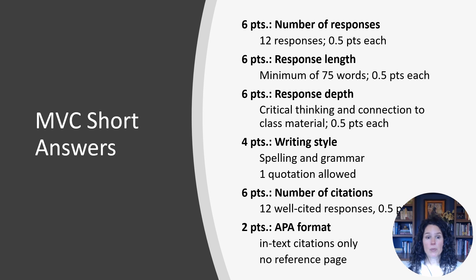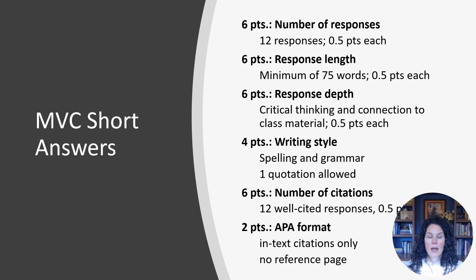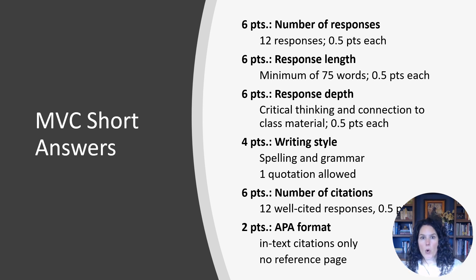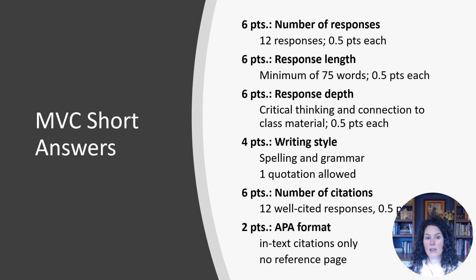We give you points for response depth — answering all parts of the prompt, showing critical thinking, and connecting to class material. We also give points for writing style, including accurate spelling and grammar; you're allowed to use spellcheck and Grammarly. We only allow one direct quote per response — something taken word for word from the simulation, a report on your child's progress, the textbook, or a lecture. Instead, paraphrase and cite to give credit for the idea.